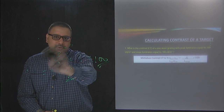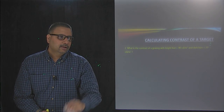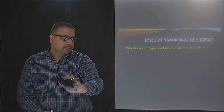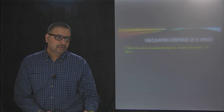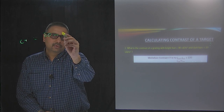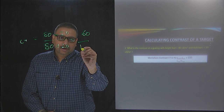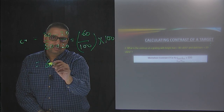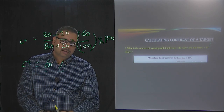Here is another example using the Michelson formula. What is the contrast of a grating with a bright bar of 80 candela per meter squared and a dark bar of 20 candela per meter squared? Using the same formula: L max minus L minimum is 80 minus 20 = 60, divided by L max plus L minimum which is 80 plus 20 = 100. So 60 divided by 100, multiplied by 100, gives 60 percent. The contrast threshold is 60 percent.